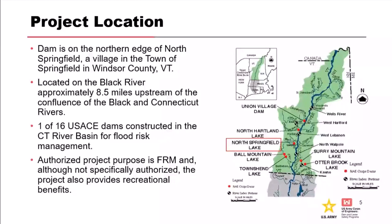North Springfield Dam is one of 16 dams along the Connecticut River Valley. It's located on the Black River, approximately 8.5 miles upstream from the confluence of the Connecticut River. It was authorized for flood reduction measures after the 1938 hurricane.